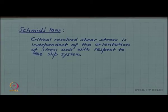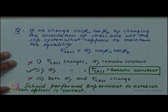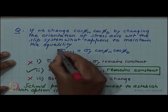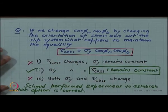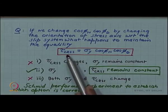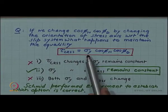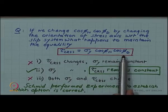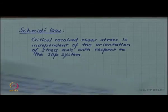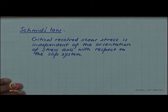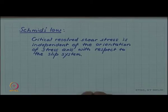Quite often, mistakenly, the relationship τ_CRSS = σ_y cos φ_n cos φ_d itself is taken as Schmid's law. But note that this relationship only relates the yield stress to the critical resolved shear stress. It does not state that critical resolved shear stress remains constant when you change cos φ_n and cos φ_d. That was Schmid's contribution — he performed careful, beautiful experiments to establish this, and that is why we honor him by naming this law after him.